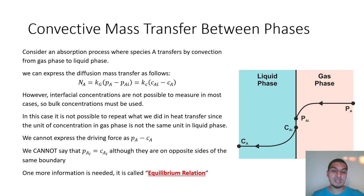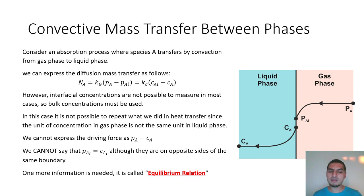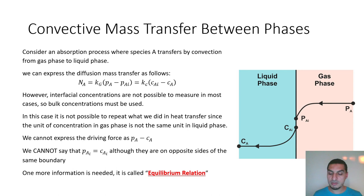This equilibrium relation is used in absorption, distillation, and any mass transfer process — it is a must. It can be an equation, tabulated data, or take any form. In heat transfer this wasn't needed because delta T is the built-in equilibrium relation. In mass transfer, you must know it as a separate relation. In the next video we'll discuss basic equilibrium relations and how to work with them. See you there.